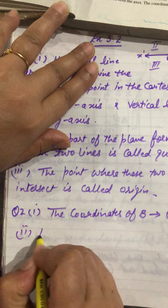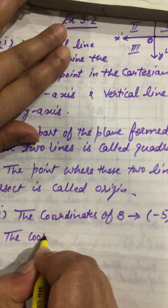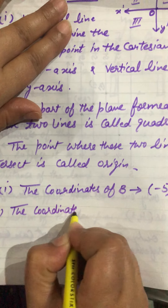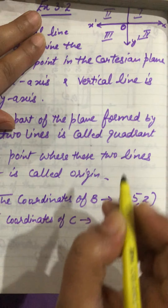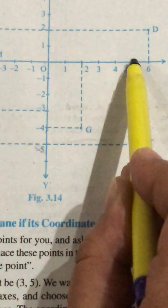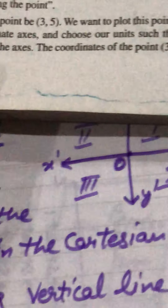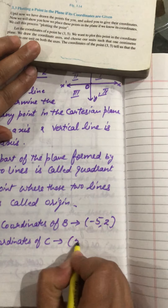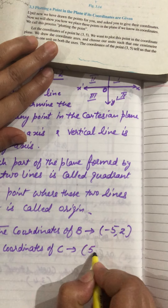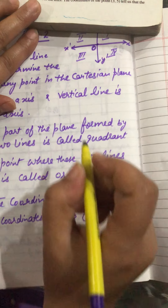The second part asks for the coordinates of C. You can see where C is on the graph. Point C touches the x-axis at 5 and the y-axis at minus 5. So the coordinates of C are (5, −5).